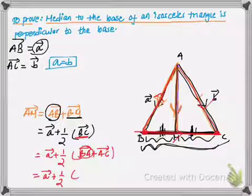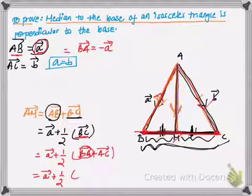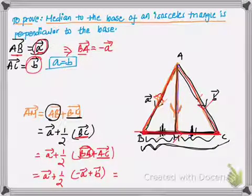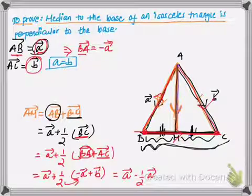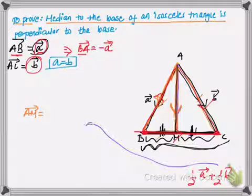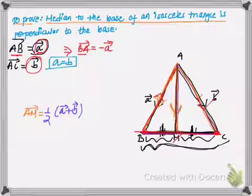Since BA is the reverse of AB, vector BA equals minus vector a. And AC equals vector b. So vector AM equals a plus one half of (minus a plus b), which gives a minus one half a plus one half b, equaling one half a plus one half b. Taking one half common: vector AM equals one half times (a + b).